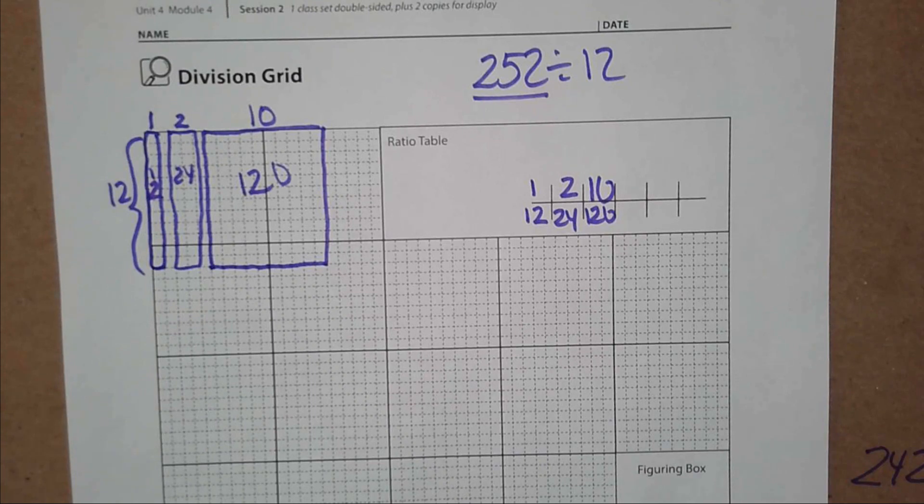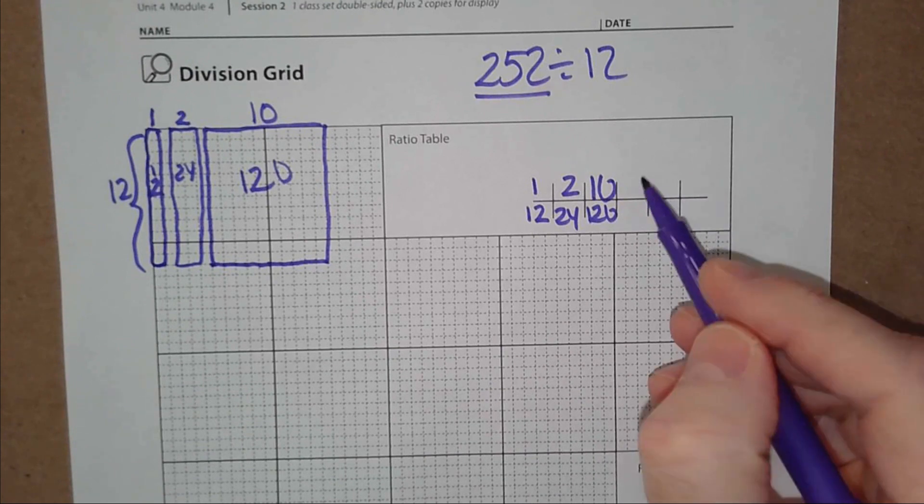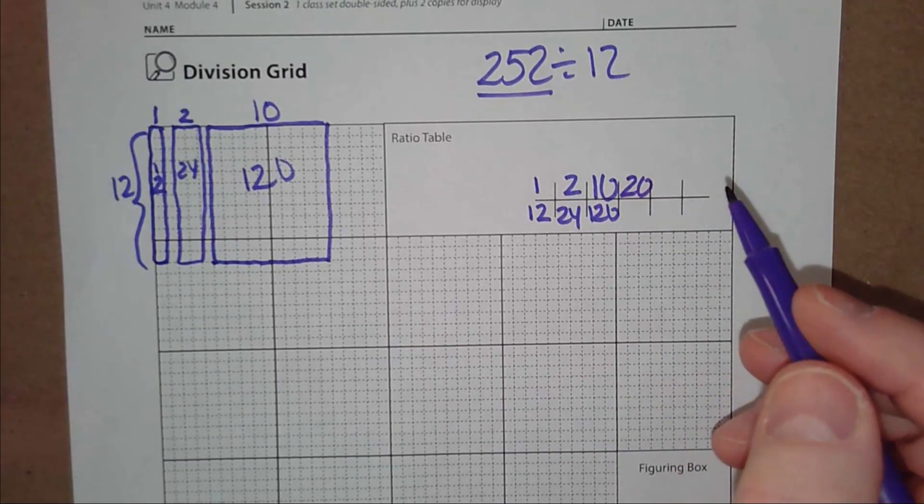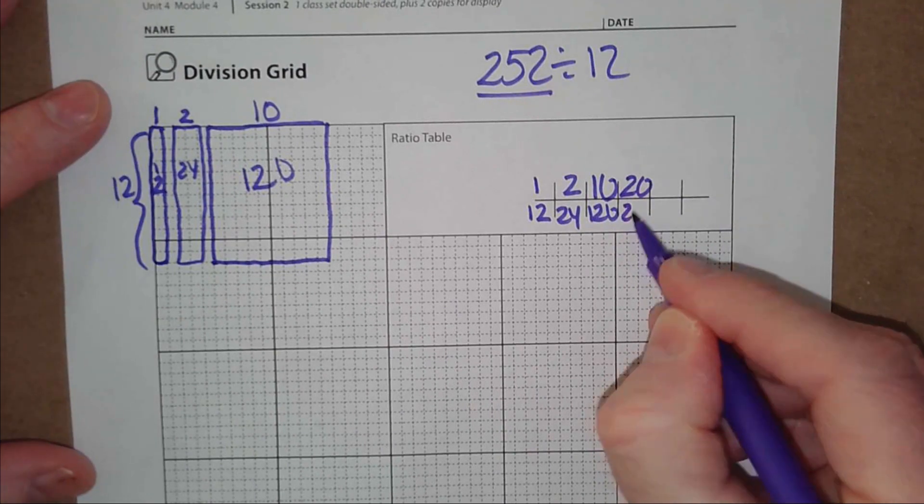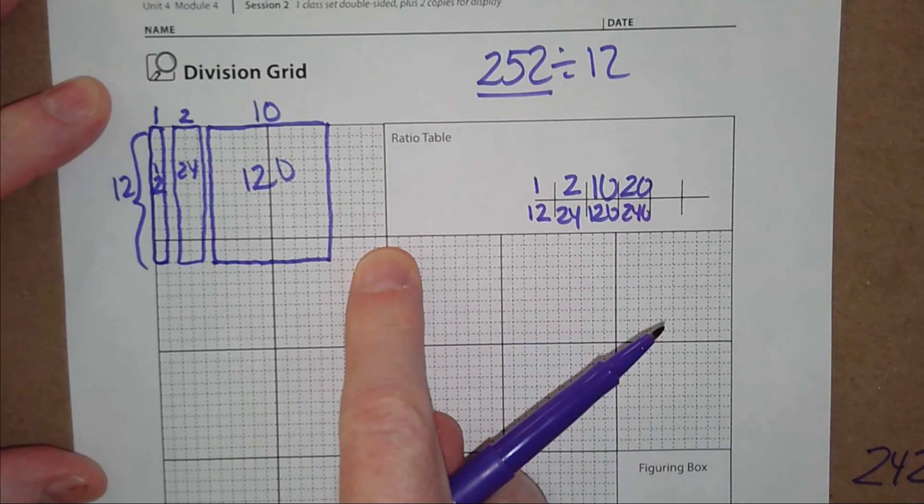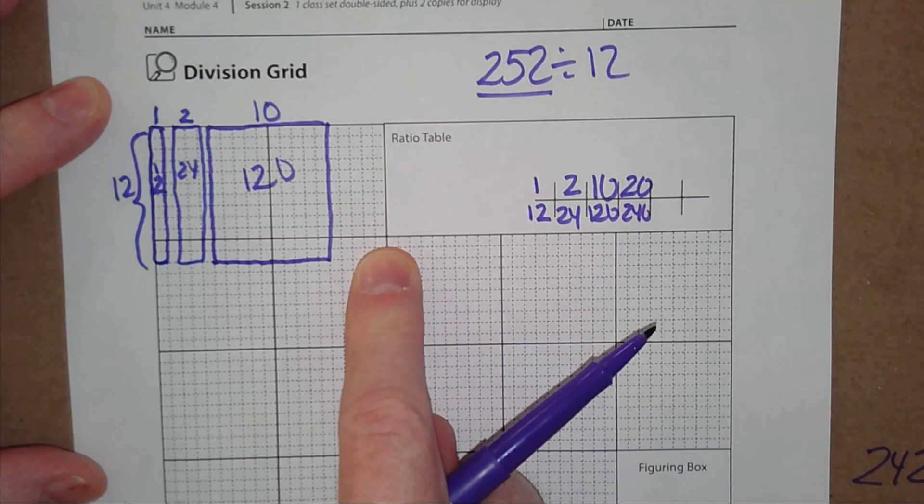What should we try next after that? Because we've got to get to 252. Any suggestions, Ella? 20. We could try 20. What are 20 groups of 12? 240. Now I just have to double this. Should I continue here? I'll double it. Hallie, should I continue there? Why? I should do 20 right here?